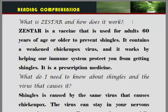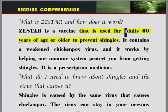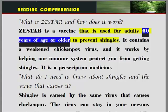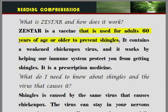What is Zestar and how does it work? Zestar is a vaccine that is used for adults 60 years of age or older to prevent shingles. It contains a weakened chickenpox virus, and it works by helping our immune system protect you from getting shingles.